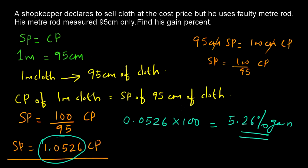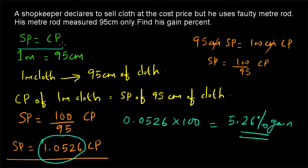The trick behind these kinds of questions is to interpret them correctly. Even though the shopkeeper claims he is selling 1 meter of cloth, he is actually selling only 95cm. So his selling price of 95cm cloth equals the cost price of 1 meter cloth, because he measures it as 1 meter. The customer pays the cost price of 1 meter, not knowing the fault. Hence, cost price of 1 meter = selling price of 95cm, and from there we get the gain percentage.